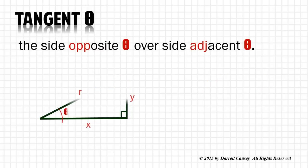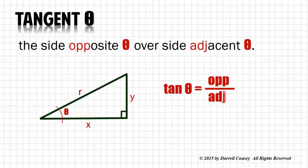Tangent is the side opposite over the side adjacent. Tangent θ is opposite over adjacent, which equals y over x.